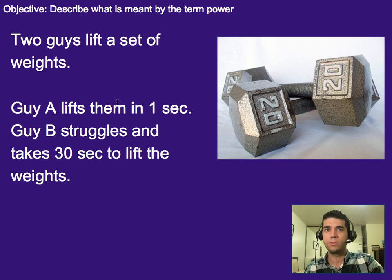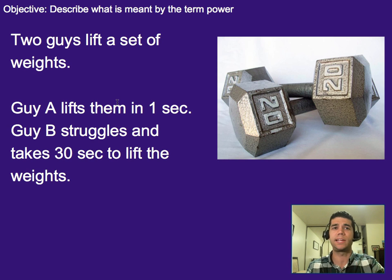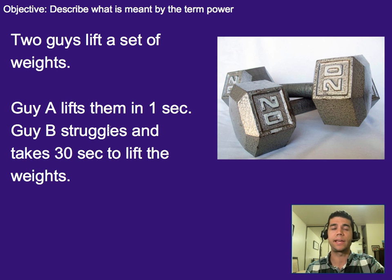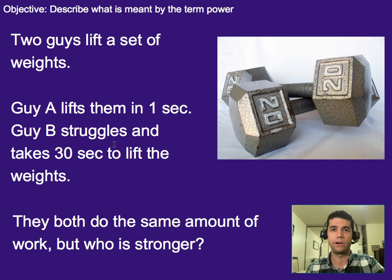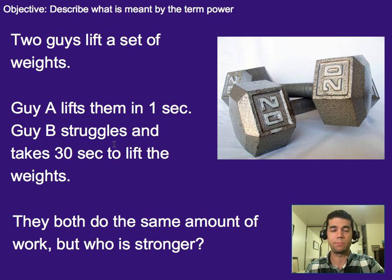Guy B, though, tries and he starts to struggle. He's really trying, and then he finally lifts them up, and it takes him 30 seconds to do so. You may not believe me, but trust me that they do the same amount of work. But the question is: who is stronger in this scenario? Clearly Guy A — significantly stronger than Guy B if he's able to get the dumbbell lifted in a much shorter amount of time.